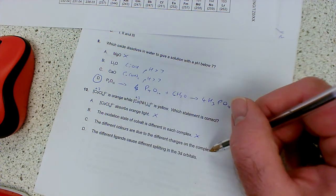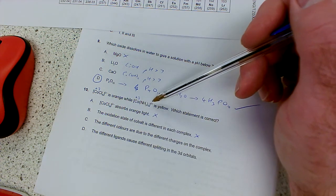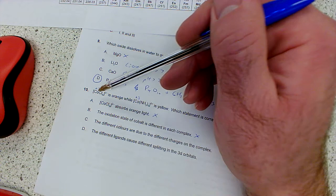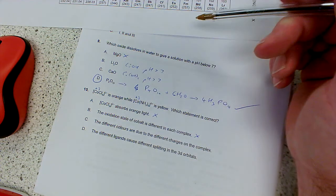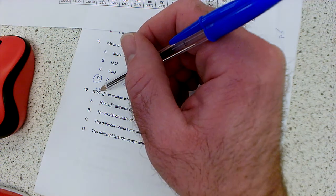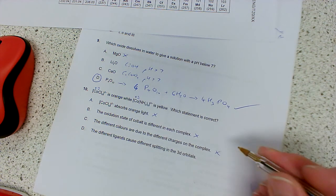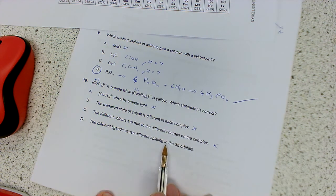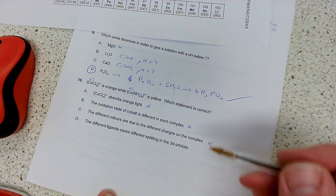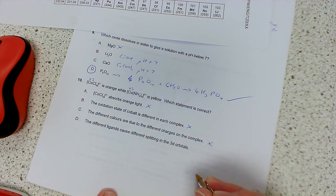Different colors are due to the different charges on the complex. No, I mean, the different charges on the metal ion, if that was the case, could cause different colors. If there was one was cobalt 2 plus and cobalt 3 plus, but they're not. So, it's not that one. The different ligands cause different splitting in the d orbitals. So, that's what we're looking for, basically.